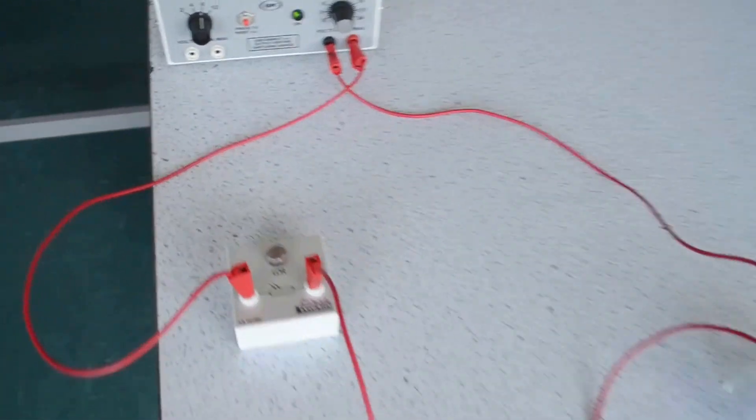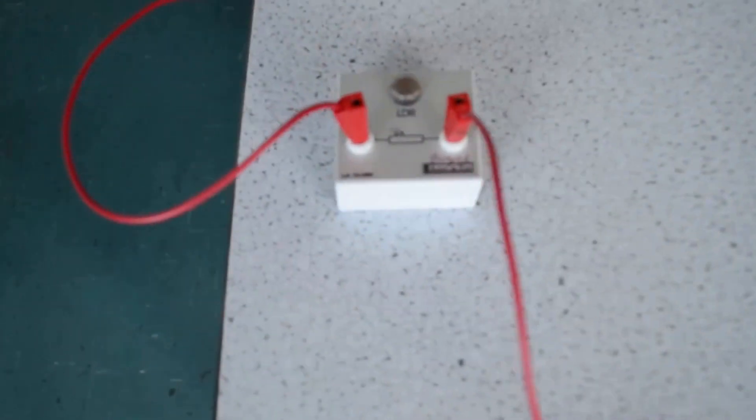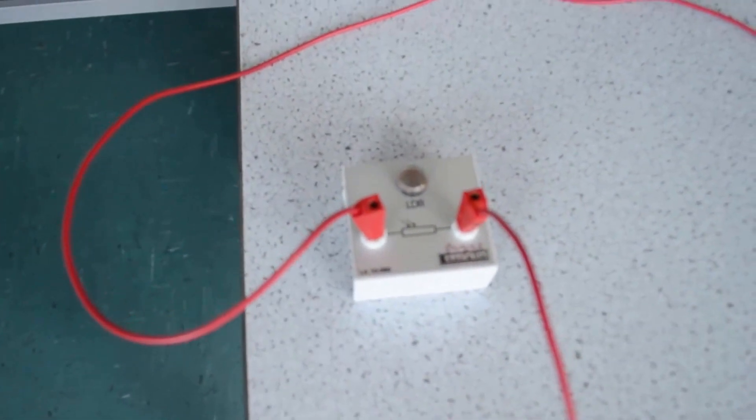So this is a potential divider circuit. I've connected to a power supply two resistors. One fixed resistor here, which actually is a variable resistor that I'm just not going to touch, and one light-dependent resistor.